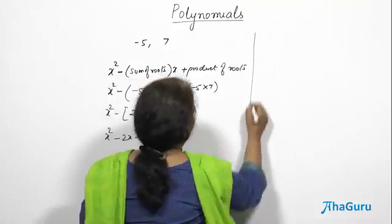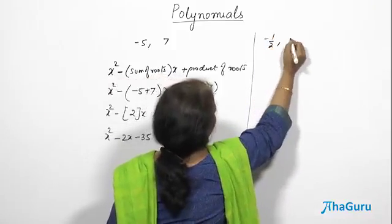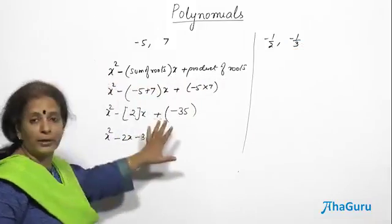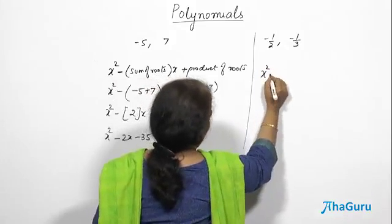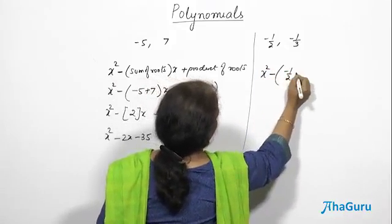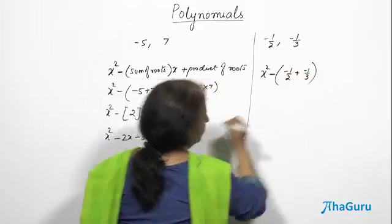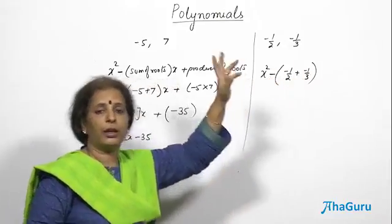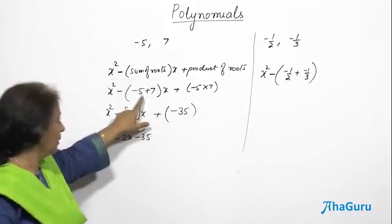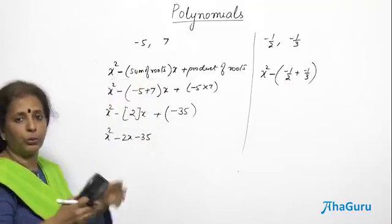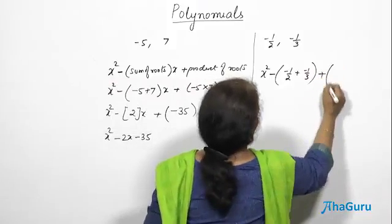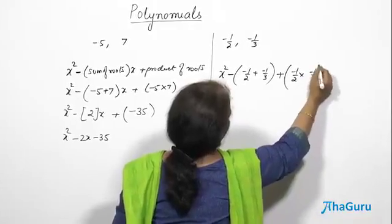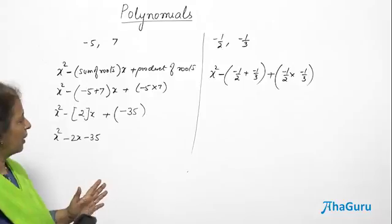Let us do one more — let the roots be minus 1 by 2 and minus 1 by 3, something in fractions, just a little more complicated. The format is the same: x squared minus (minus 1/2 plus minus 1/3)·x plus (minus 1/2 into minus 1/3). Be very careful with the minus signs — both roots are negative and they are to be added because we need the sum of the roots.